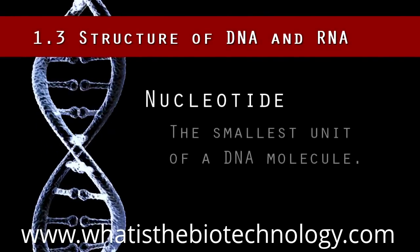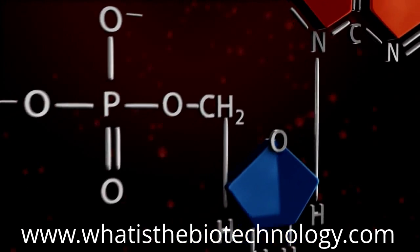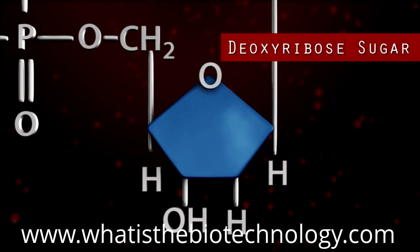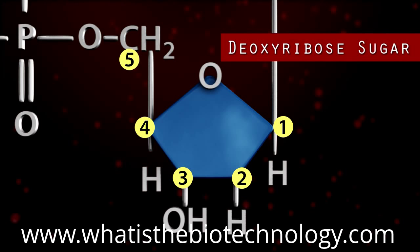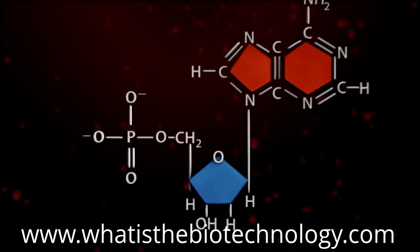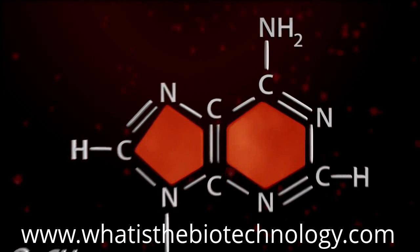Remember that a nucleotide is the smallest unit of a DNA molecule. There are three components to a nucleotide. The deoxyribose sugar, shown in blue, is a five-carbon ring. Although only the fifth carbon is shown, a carbon is represented by the meeting of two lines on the pentose ring. The carbons are numbered clockwise, starting from the central oxygen. The phosphate group bonds to the fifth carbon, and on the third carbon there is a hydroxyl or OH group. The nitrogen base, shown in orange, is on carbon number one.